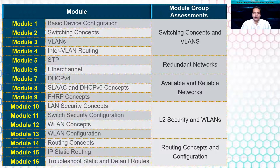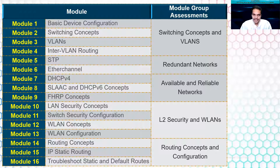After that, Module 5 and Module 6 deal with redundant networks — Spanning Tree Protocol and EtherChannel — and these two modules have the second group exam called the Redundant Networks exam. Then we start working with DHCPv4, DHCPv6, SLAAC, and FHRP concepts, and these three modules have the third group exam: the Available and Reliable Networks exam.